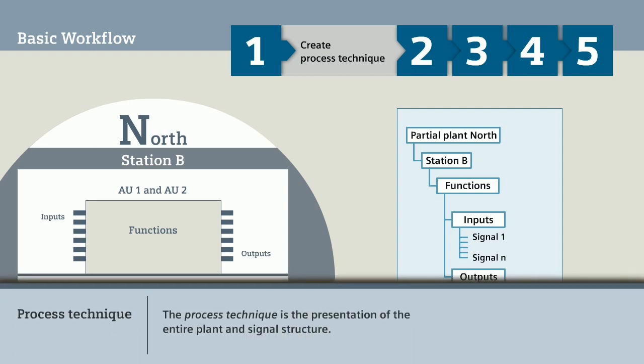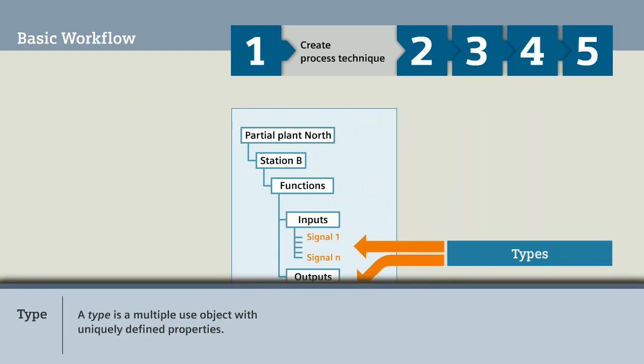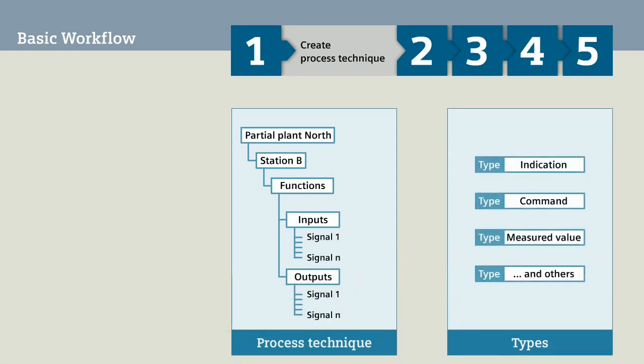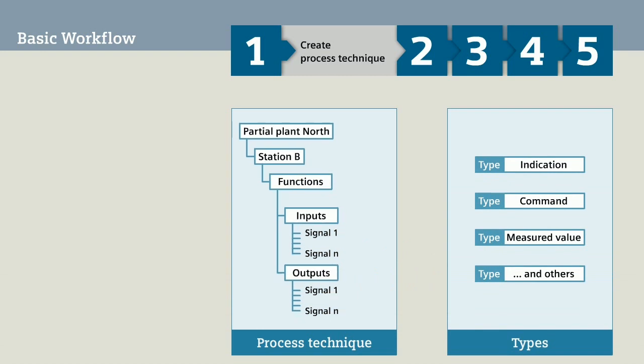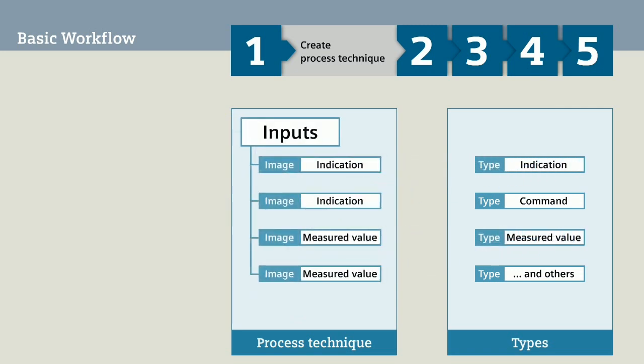The process technique is the presentation of the entire plant and signal structure. When you insert signals, you use the so-called types for this. A type is a multiple-use object with uniquely defined properties. Examples of signal types are indications, commands, or measured values. As soon as you insert such a signal type in the level hierarchy, it becomes an image.